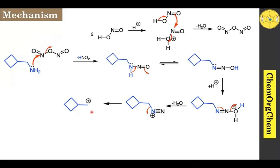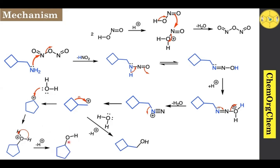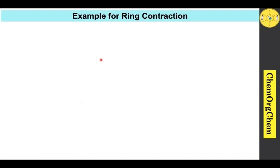This carbocation intermediate can be trapped by a water molecule, generating the unrearranged cyclobutane methanol as a product. If rearrangement takes place, the carbon migrates, generating the corresponding cyclopentane carbocation. After forming this cyclopentane carbocation, it is readily trapped by a water molecule — the oxygen lone pair attacks the carbocation center, generating an intermediate, followed by loss of H⁺ to give cyclopentanol as the product.